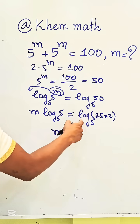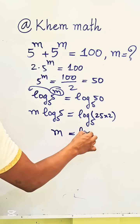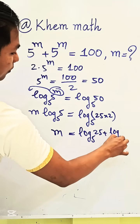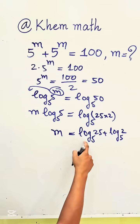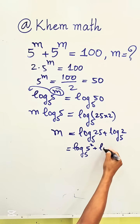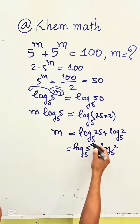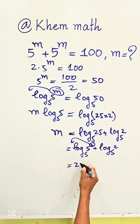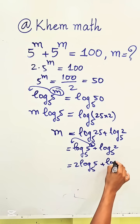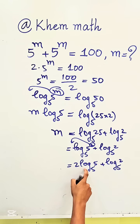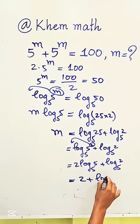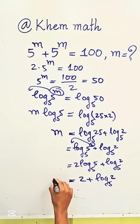We use the logarithm formula: m equals log base 5 of 25 plus log base 5 of 2. Now log base 5 of 25 is log base 5 of 5 squared, so we take 2 in front of the log to get 2 times log base 5 of 5, plus log base 5 of 2. Since log base 5 of 5 equals 1, we get m equals 2 plus log base 5 of 2.